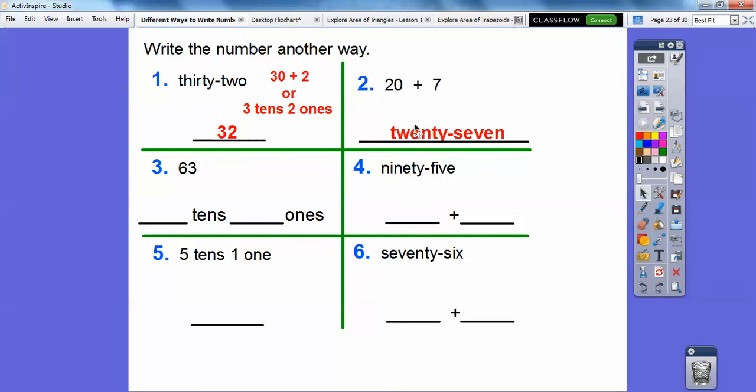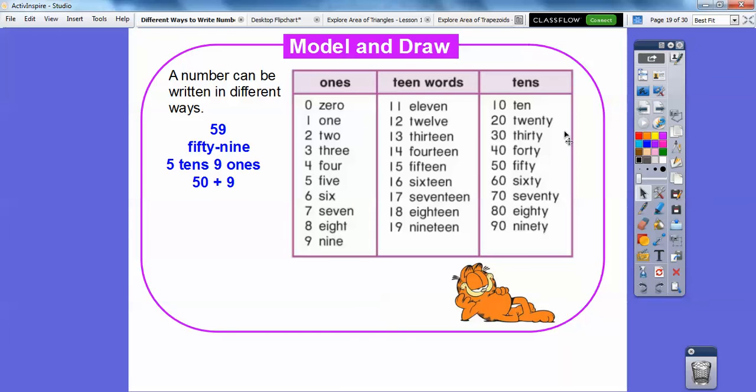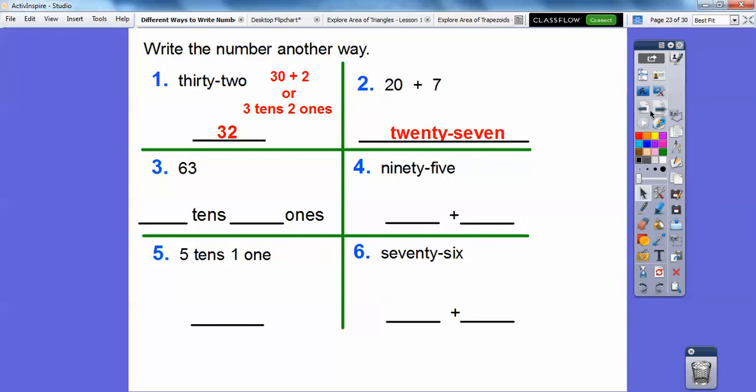20 is T-W-E-N-T-Y, so this is how we spell these, so 20, and then 7, 27 right there. We could also write that as 27, or 2 tens and 7 ones. 2 tens and 7 ones.